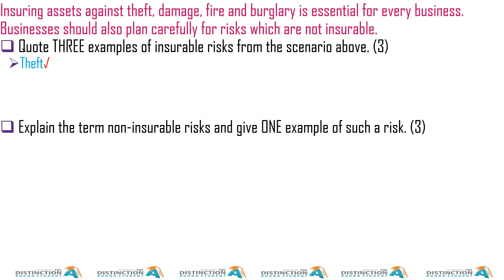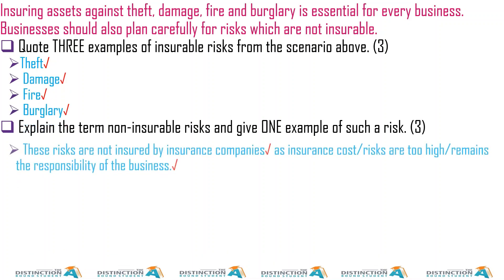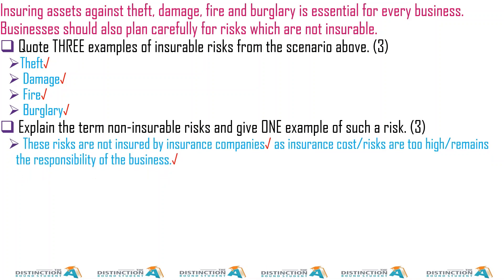Quote three examples of insurable risk from this scenario — this one is obvious because it's right there. Unless they had mixed insurable and non-insurable risk, like theft and war together, it could be confusing. But if they just list insurable risk, you just identify it.